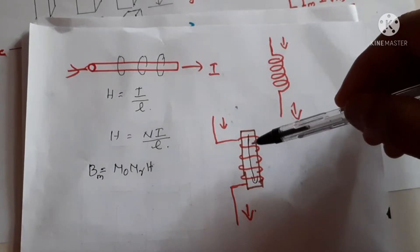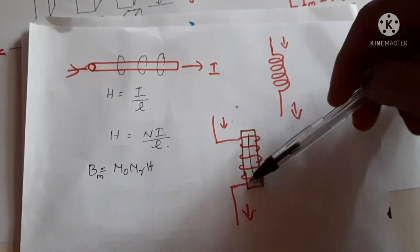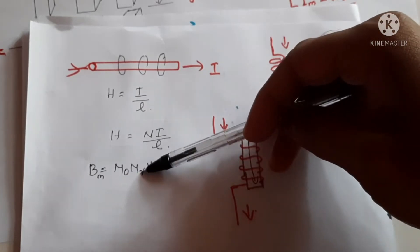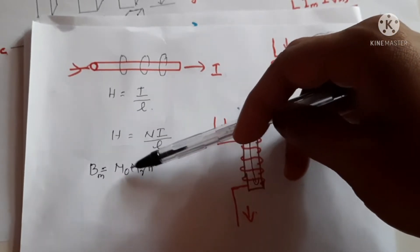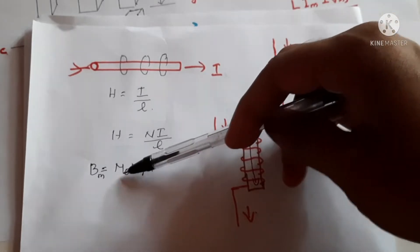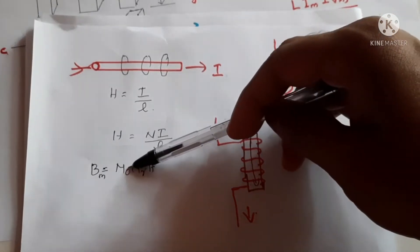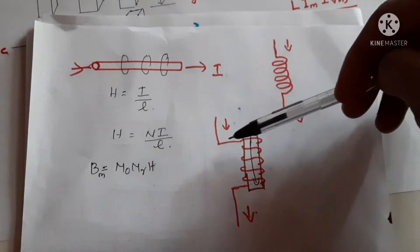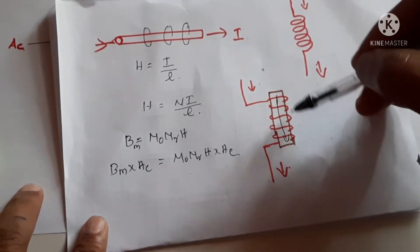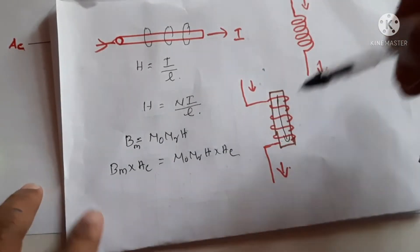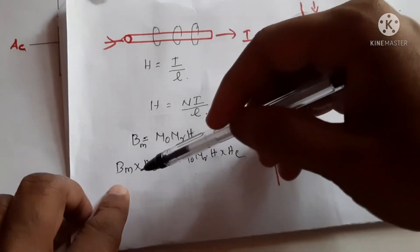Now if we put a core inside this coil, it will generate a flux. The value of the flux depends upon the permeability of the material, given by mu_R (relative permeability). Mu_zero means the permeability of air; mu_R tells how many times the material's permeability is bigger than that of air. If we multiply these two values, we get the permeability of the material. Multiplying that with the magnetic field strength gives total flux, and multiplying with the core area AC gives the total flux linkage.